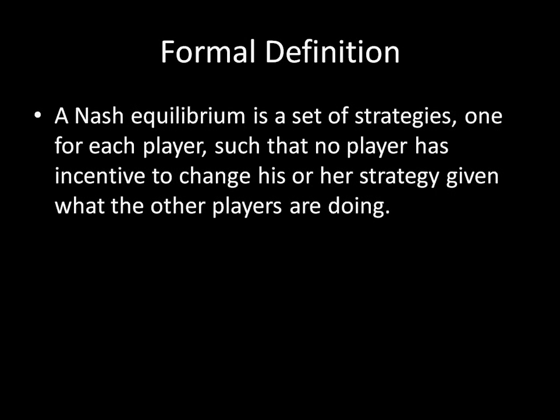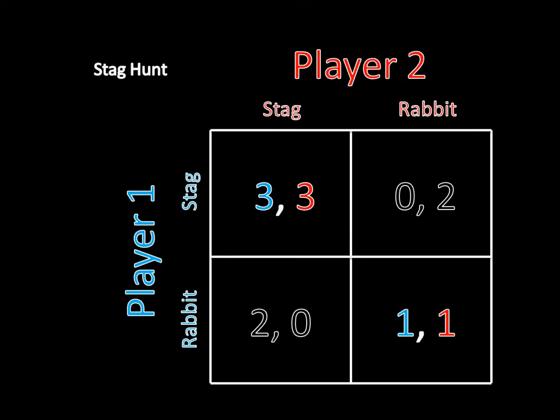But what does that actually mean? That's a big block of words and it's pretty hard to break down. We've seen examples in the stag hunt, where both players choosing to hunt a stag or both players choosing to hunt a rabbit is a Nash equilibrium. If you don't remember this, go check out the video on the stag hunt. But that still doesn't give you a great intuitive understanding of what Nash equilibrium is. So in this video, we're going to look at an example from everyday life where we actually see a Nash equilibrium being played by people every day.